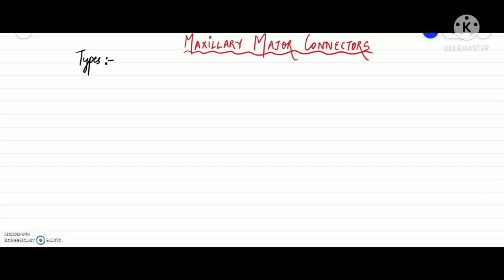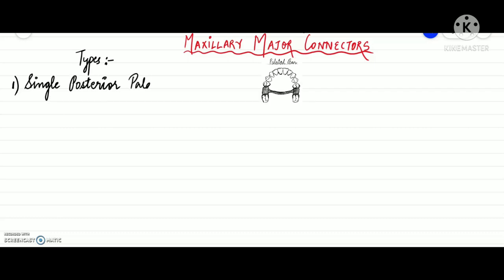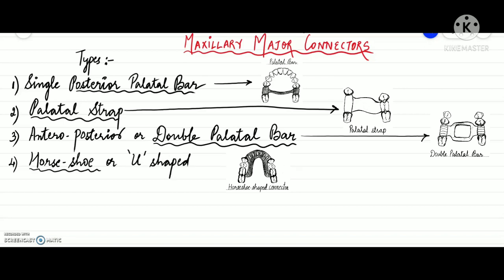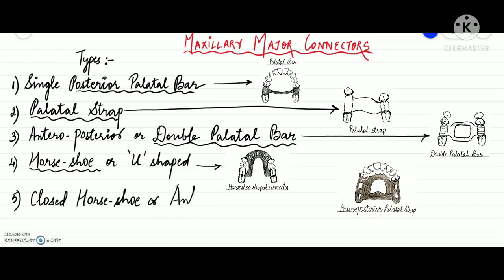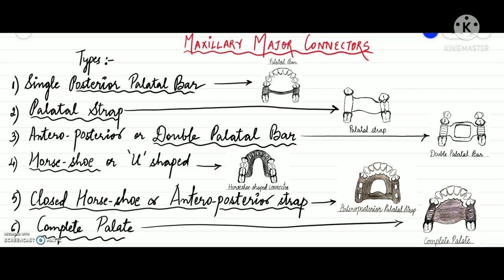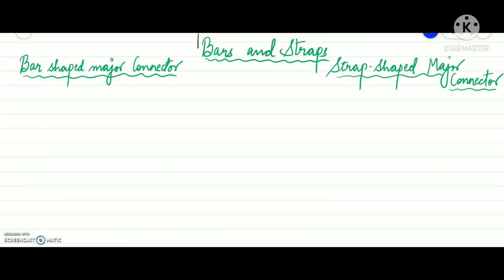Major connectors are broadly divided into two types: maxillary and mandibular. Here we will discuss the types of maxillary major connectors: single posterior palatal bar, palatal strap, anterior-posterior or double palatal bar, horseshoe or U-shaped major connector, closed horseshoe or anterior-posterior strap, and complete palate. Before discussing each type, we should understand the difference between a bar and a strap or plate.